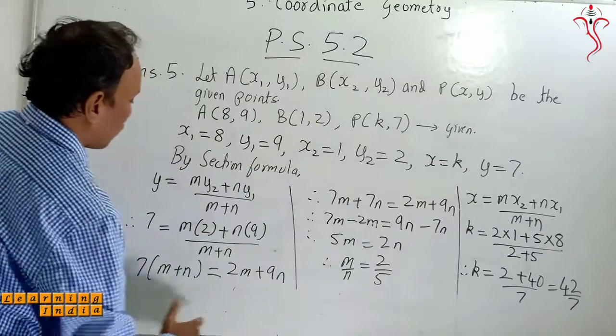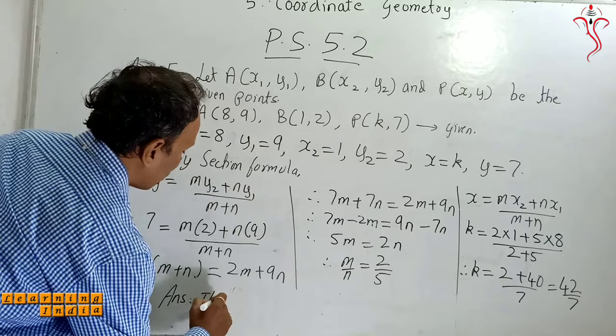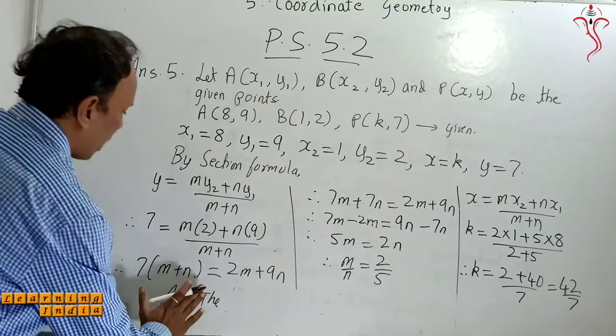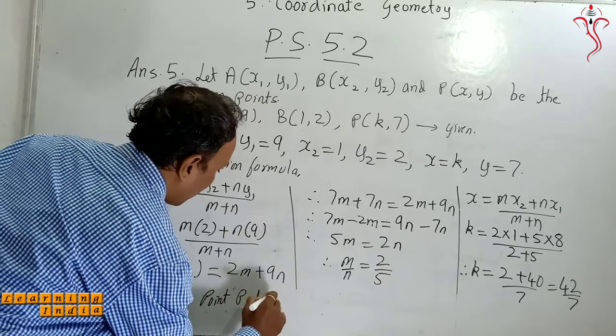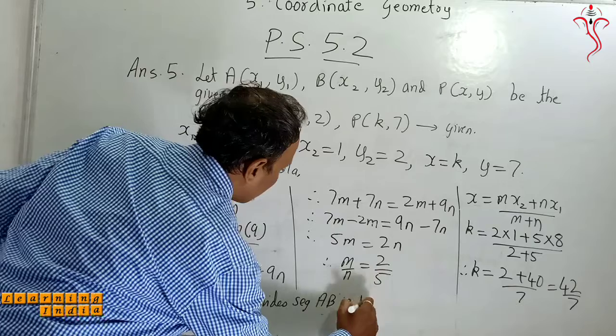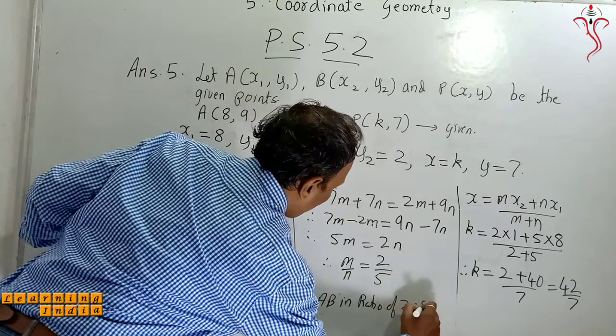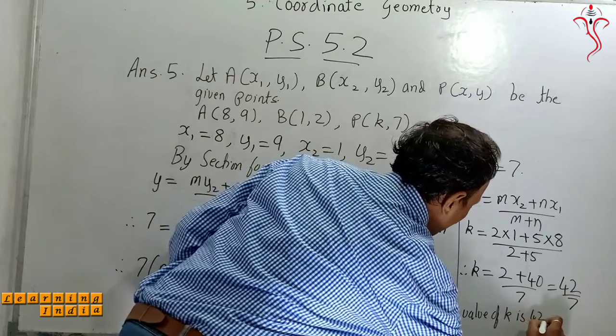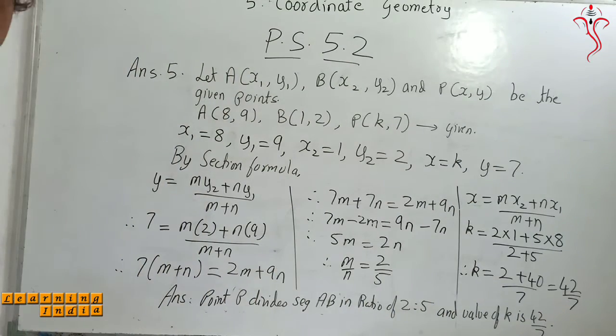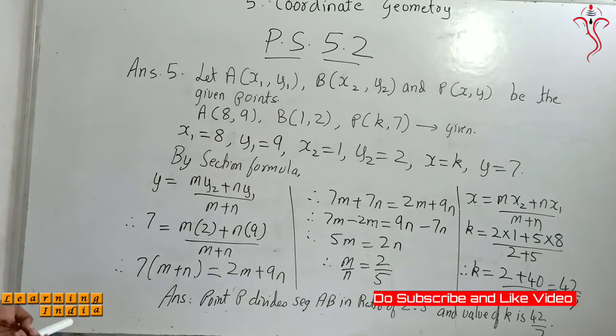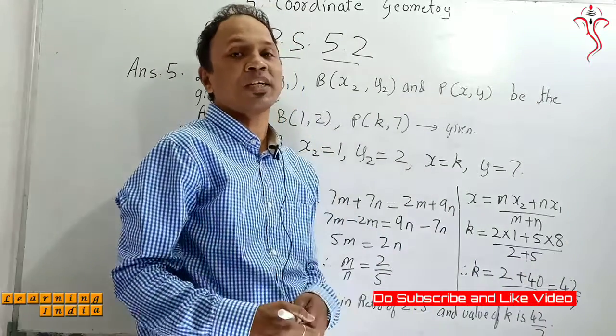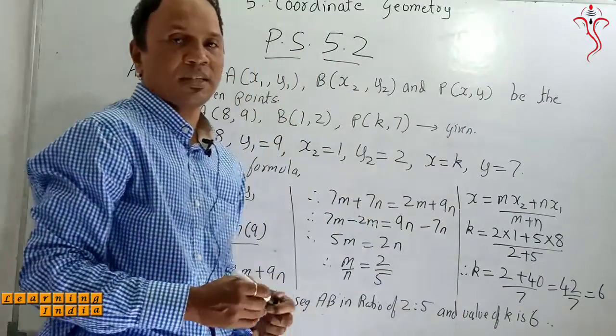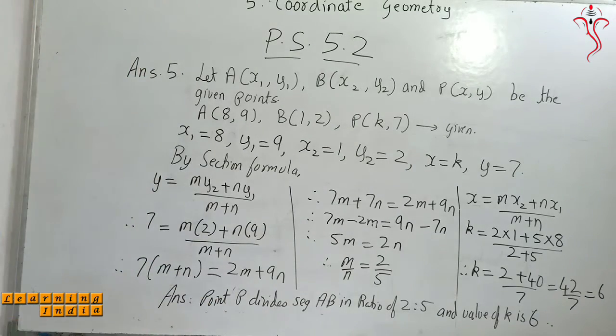So we can write down the final answer. Final answer is point P divides segment AB in the ratio of 2 is to 5, and value of k is 42 upon 7, and the value of k is 42 upon 7, which is equal to 6. Here also you can put the value of k is 6. Like this we have completed question number 5. Now we will see question number 6.